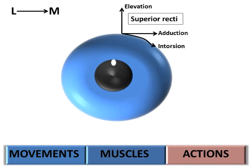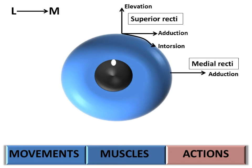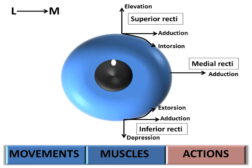Now let us see about the movements brought about by these muscles. Superior rectus: elevation, adduction, intorsion. Medial rectus: adduction. Inferior rectus: depression, adduction, extorsion. Lateral rectus: abduction. All recti muscles are adductors except the lateral rectus, which brings about abduction.